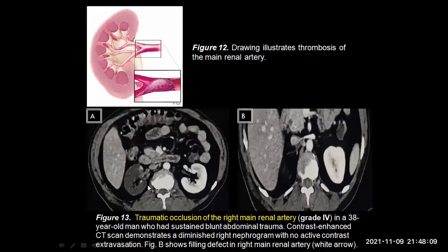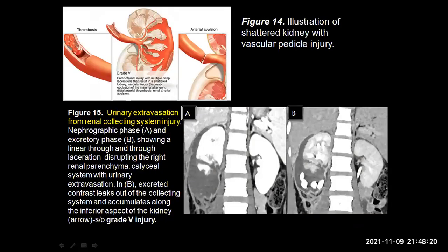Again, one more case of grade 4 injury where you can see that there is thrombotic occlusion of the right renal artery and there is global infarction of the right kidney — this is also graded as a grade 4 injury. Coming to grade 5 injury, this includes either a shattered kidney or a vascular pedicle avulsion at the renal hilum. Here you can see that in the right kidney there is a through-and-through laceration in the lower pole region extending into the collecting system. This can be very well demonstrated in the delayed scan where in the excretory phase you can see that there is active contrast extravasation. Such contrast extravasation and collecting system injury will comprise only a grade 4 or a grade 5 injury.